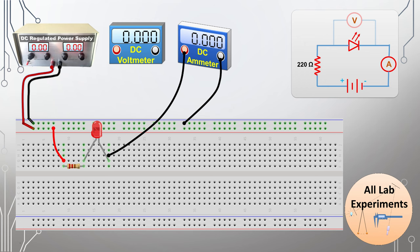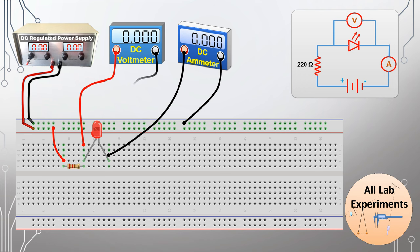We can also observe that the voltmeter is in parallel to the LED. We connect the positive terminal of the voltmeter to the P side and the negative terminal of the voltmeter to the N side of the LED. In this way, we complete our circuit.